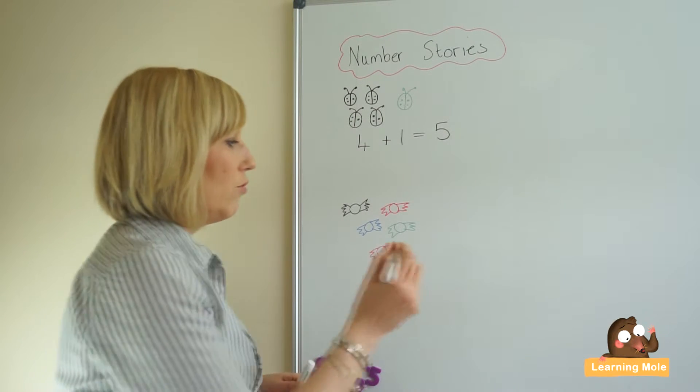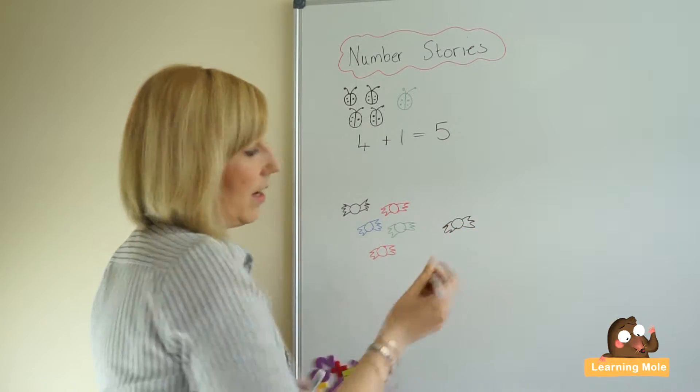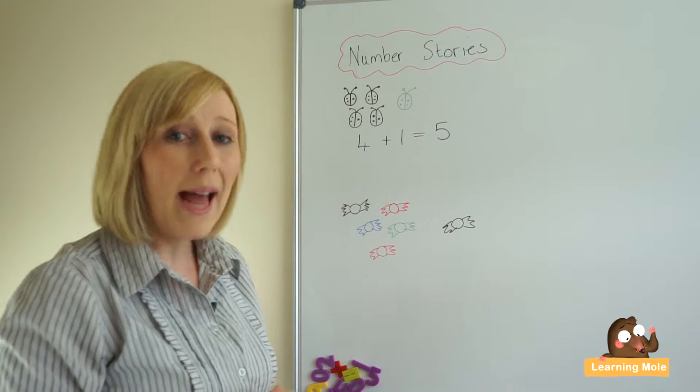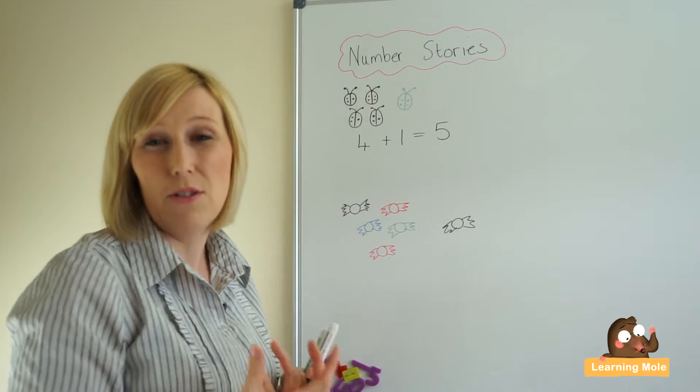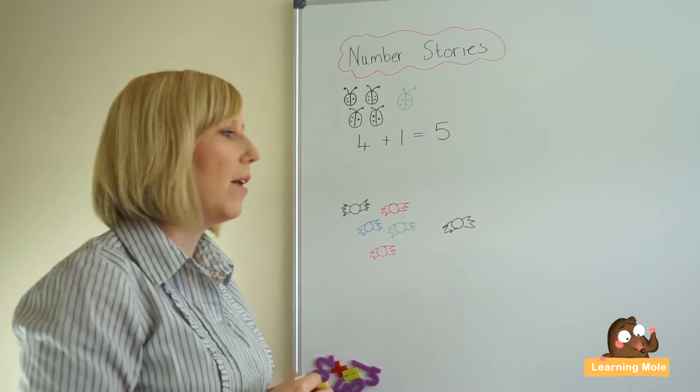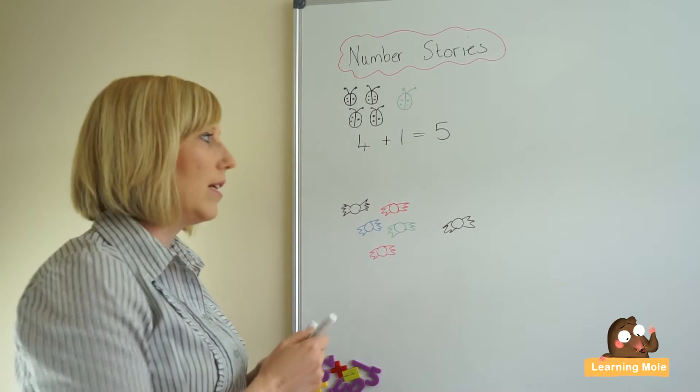Again, what you're encouraging or hoping your child to do is that they will draw their one more little sweetie. You might even say my mummy gave me one more red sweetie and again they might draw it in red. So again you're taking in those other aspects of maths and they will tell you that they have got six.